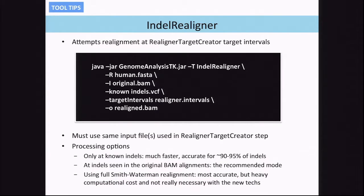One option is to perform realignment only at known sites — this is a very fast approach, but you'll miss any new indels that have not yet been discovered. What we recommend is using indels seen in the original BAM alignment, which also uses the entropy measure. If you need the best data and can tolerate the cost, you can use a full Smith-Waterman realignment, which is the most accurate but comes at a very heavy computational cost.